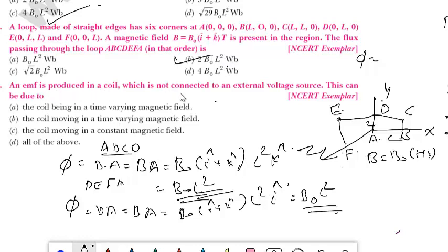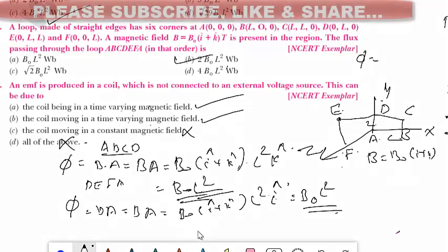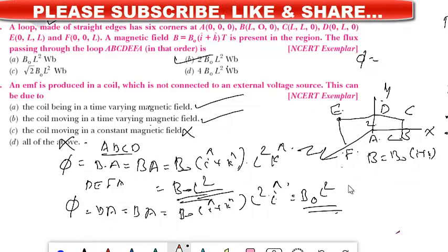An EMF is produced in a coil not connected to an external voltage source. This can be due to: the coil being in a time-varying magnetic field — yes, that is correct — or the coil moving in a time-varying magnetic field — also correct. The coil moving in a constant magnetic field is wrong. So these two options are the correct answers. These are the questions discussed today. Hope today's video is useful. Please subscribe, like, and share. Thank you for watching.